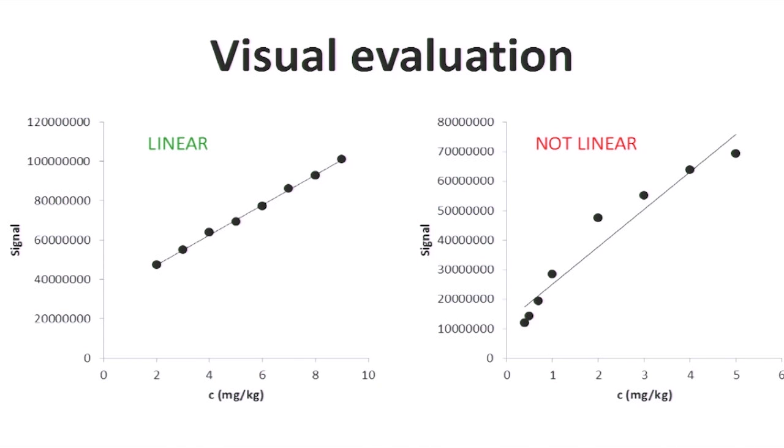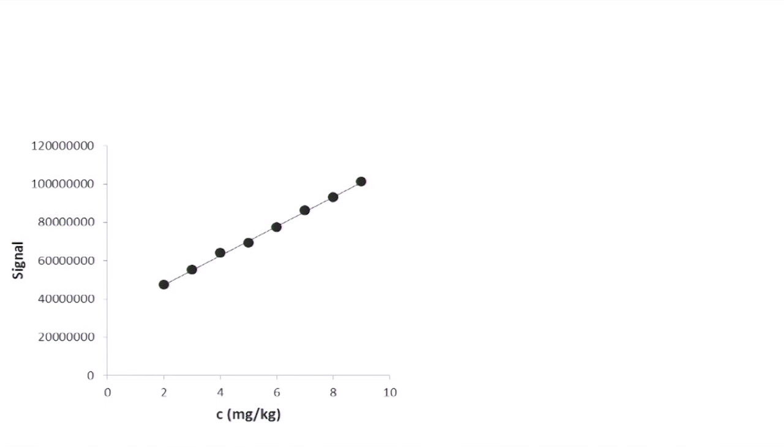But what is it that we are actually looking at and evaluating? In order to evaluate linearity, we have to know that the simple linear regression model is achieved by setting a straight line through the data points, so that the sum of squared residuals is minimal.